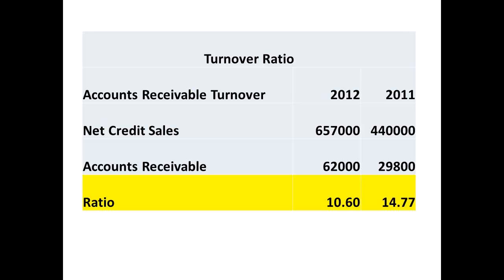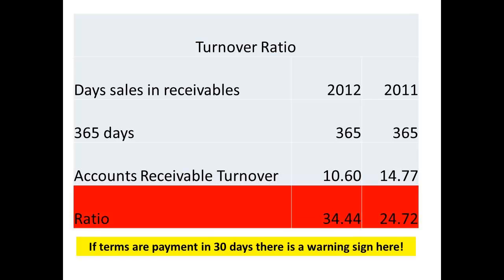The ratio becomes more significant when we use it to determine day sales in receivables. In simple terms, this is a measure of how long the sales amount remains in receivables before the cash is obtained — in other words, how long will it be before the customer pays? We use the accounts receivable turnover figures and divide into 365 days. The figures now show us a red flag: the ratio for 2011 showed an average of almost 25 days before payment was received. In 2012, it had risen to 34 days. Since most businesses will only offer credit for 30 days, these figures suggest there is a real problem to be addressed here.